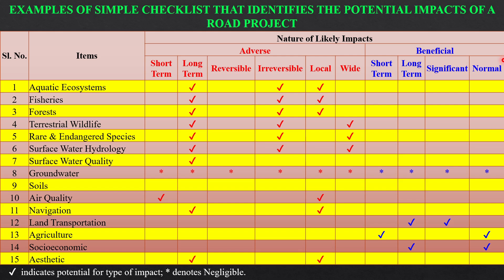This is another example showing potential impacts of a road project. The checklist has two likely impact columns — adverse and beneficial — with sub-columns for short term, long term, reversible, irreversible, local, or wide under adverse; and short term, long term, significant, and normal under beneficial. For fisheries, the impact is adverse, long term, irreversible, and local if part of the fishery gets filled up. Agriculture shows a short term, normal impact, while socioeconomic shows long term, normal beneficial impact.